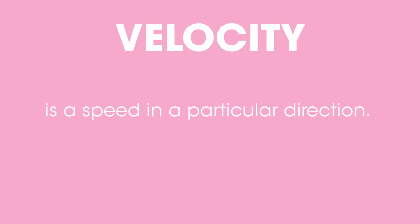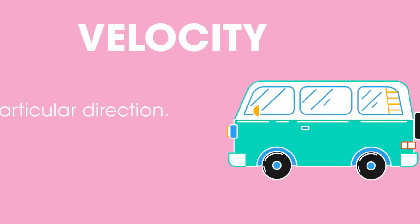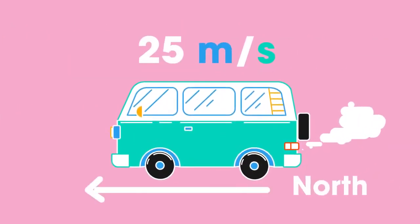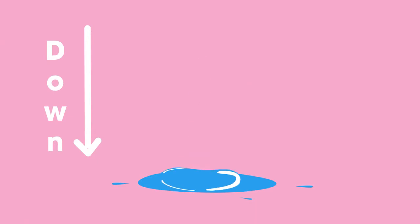Velocity is a speed in a particular direction. For example, a van travelling north at 25 meters per second and a raindrop moving down at 1 meter per second.